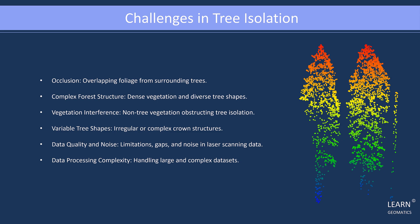Variable tree shapes, such as irregular or complex crown structures, pose additional challenges. Data quality and noise, including limitations, gaps, and noise in laser scanning data, also need to be addressed. Lastly, the processing of large and complex datasets adds complexity to the task of tree isolation.